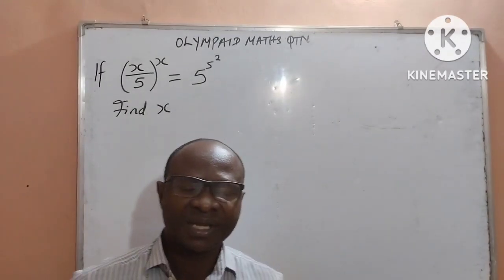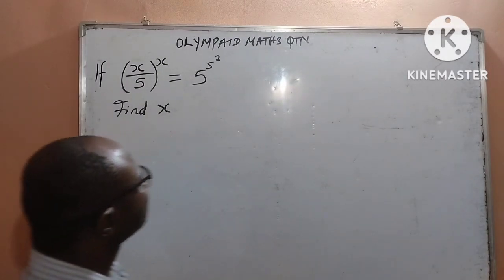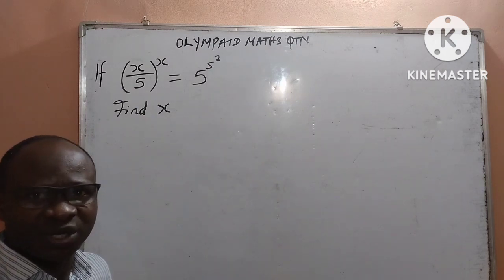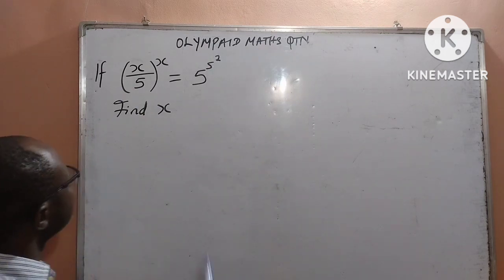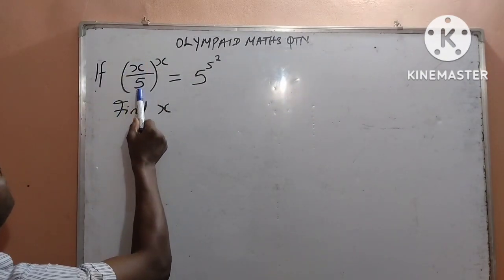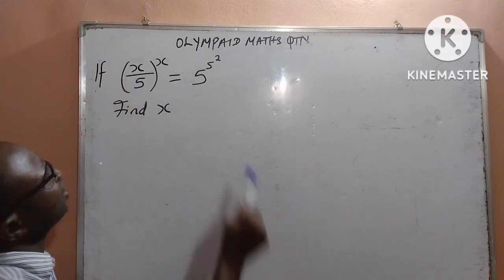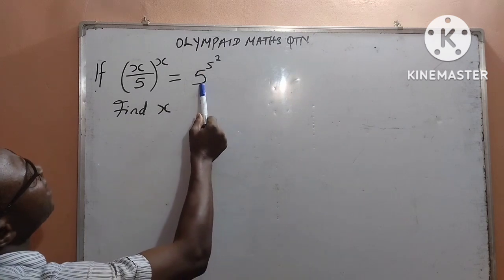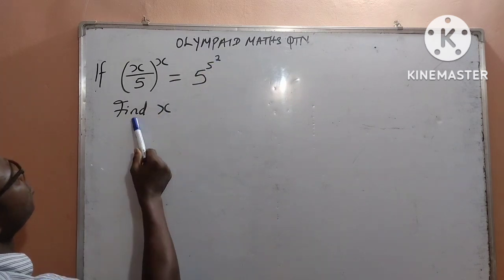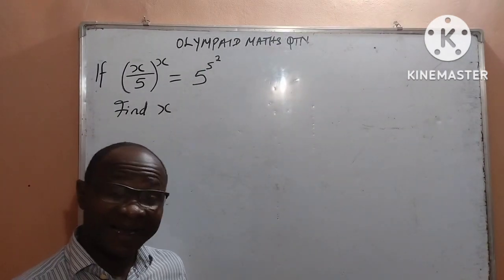Thank you, viewers. Thank you for stopping by. In today's mathematics class, we shall have an Olympiad mathematics question. As written on the board: if (x/5)^x is equal to 5 to the power of 5 to the power of 2, then we shall find the value of x.